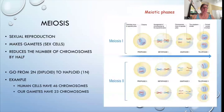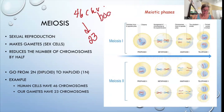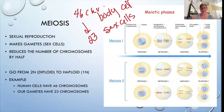Meiosis is sexual reproduction. This is how we make gametes — or sex cells — our eggs and our sperm. We need to have half our number. We know in humans we have 46 chromosomes. We get half from mom and half from dad, so we need to get down to 23. This would be our body cell, and then this would be our sex cells or gametes — 23. So we have to reduce our number of chromosomes.